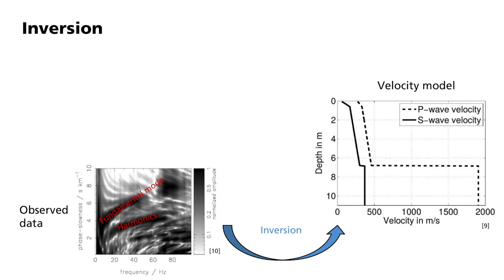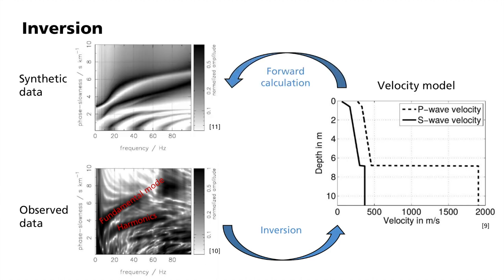In the original publication by Lisa Gross, this boundary is interpreted as a groundwater table, since an increased water saturation reduces the shear wave velocity more than it reduces the P-wave velocity. The synthetic dispersion curve forward calculated from this model depicts the characteristic elements of the observation well and underscores the result of the inversion.